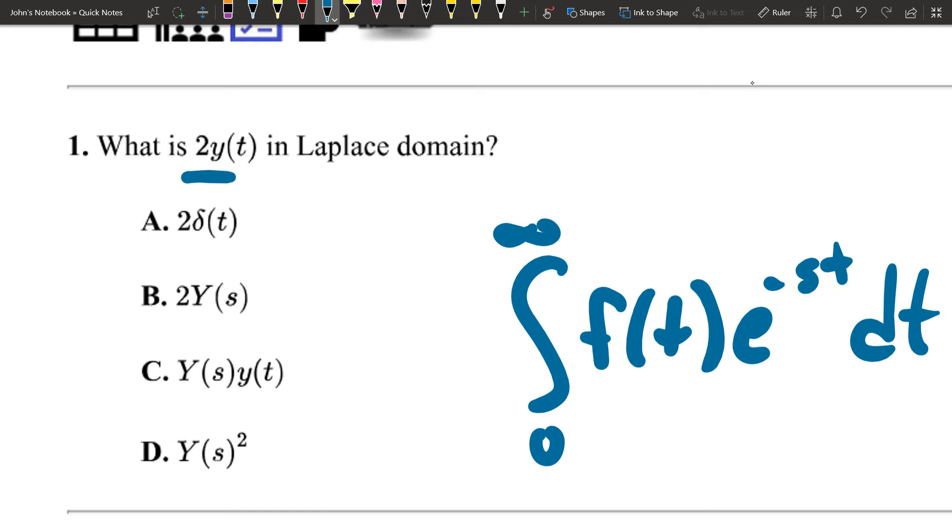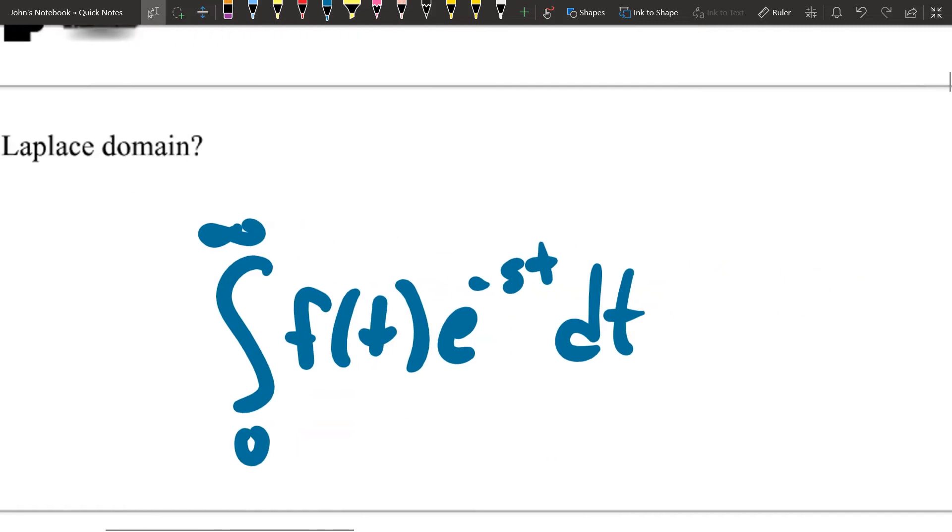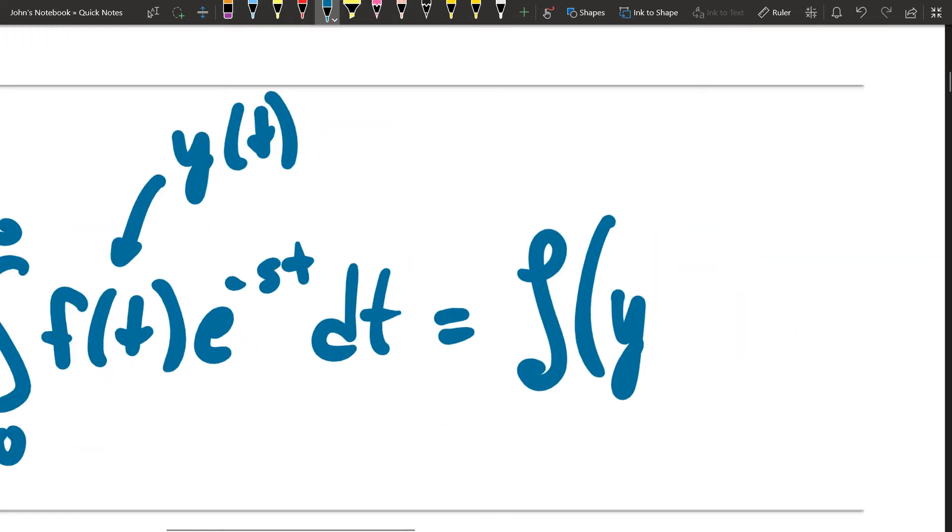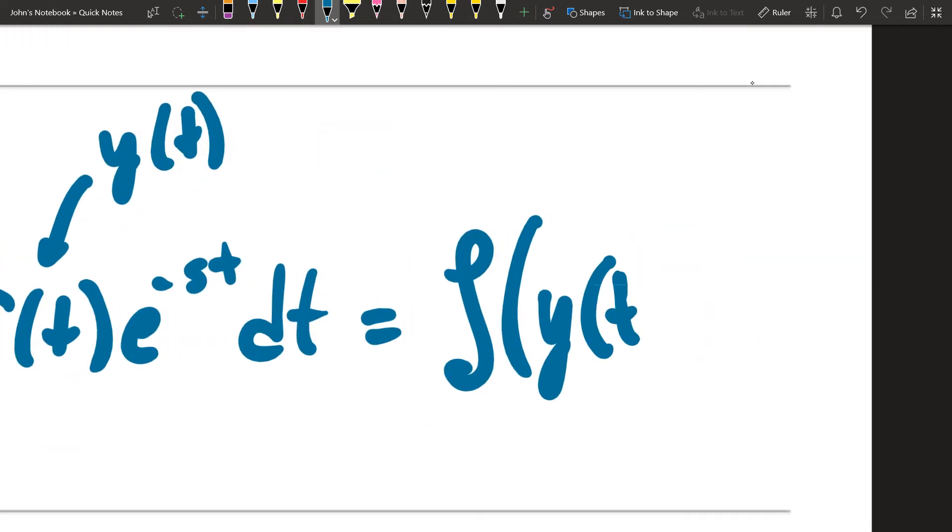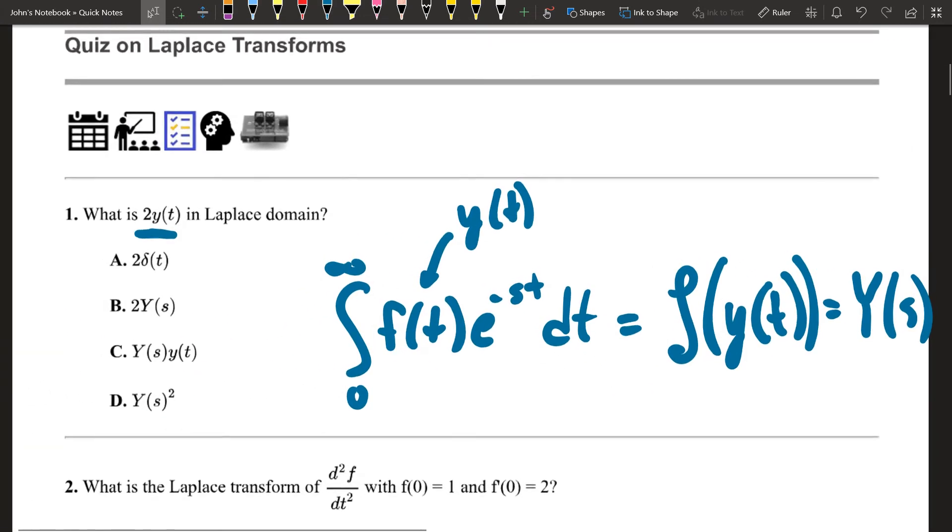In this case, this is just a variable, 2 times y of t. If I put y of t in here for f of t, then that is just the definition of the Laplace of y of t, and that is going to be equal to y of s. In this case, Laplace domain for this one is just going to be 2 times that variable.